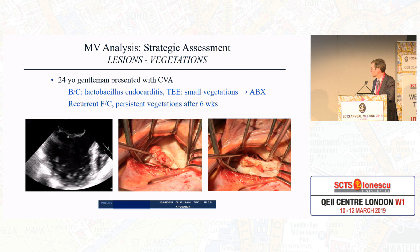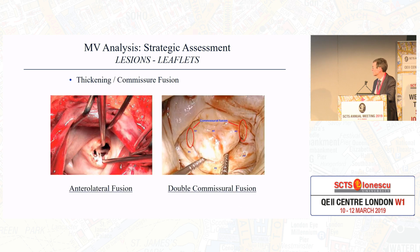At surgery, he was found to have vegetations present on the leaflet, mainly focused on the posterior leaflet, and were able to be fixed. Looking at thickening or commissural fusion, we can have localized involvement at one commissure, or involvement of both the anterior lateral and posterior medial commissures with fusion causing stenosis and/or regurgitation.